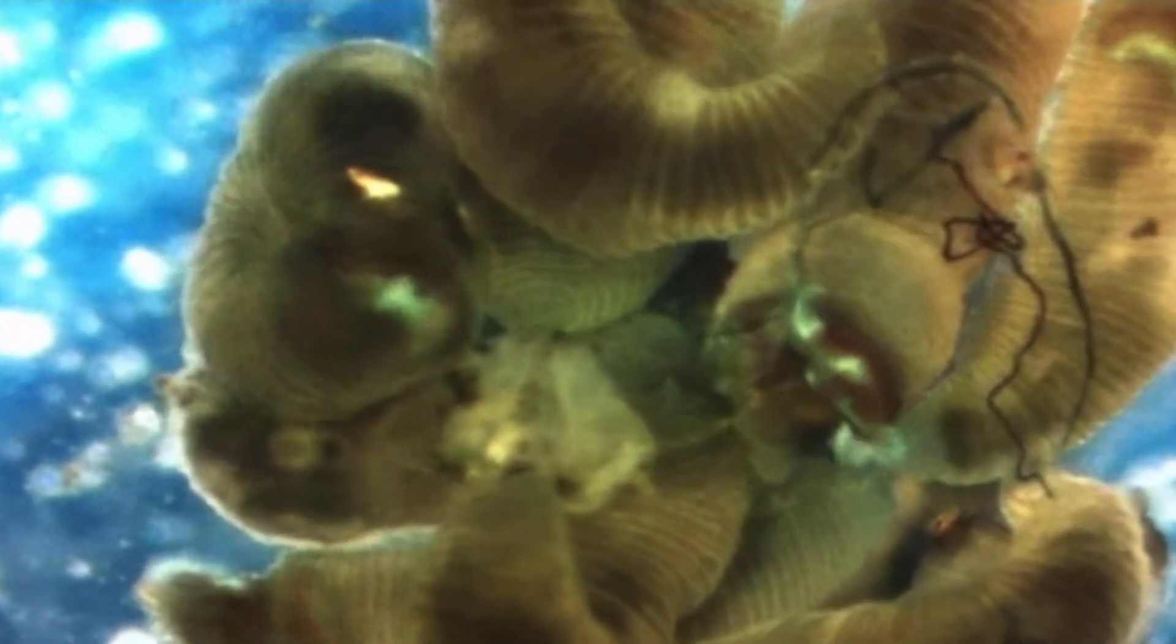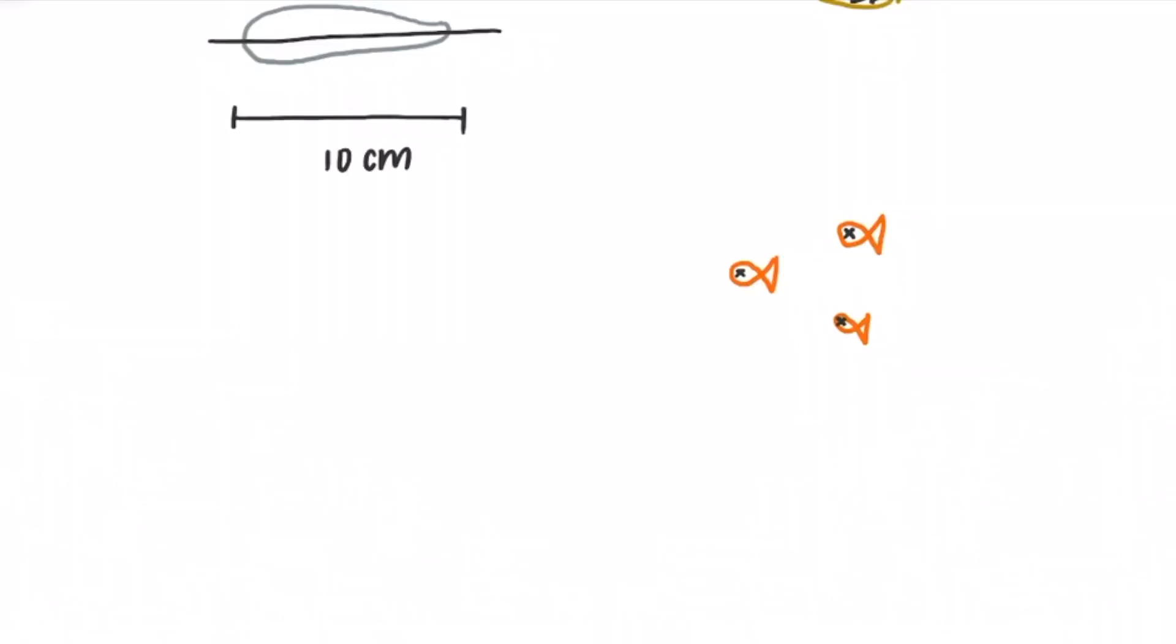Most of them eat detritus, which is dead organic material, by mopping it off the surface. Others eat their way through the sand as they burrow and process the edible bits in it.